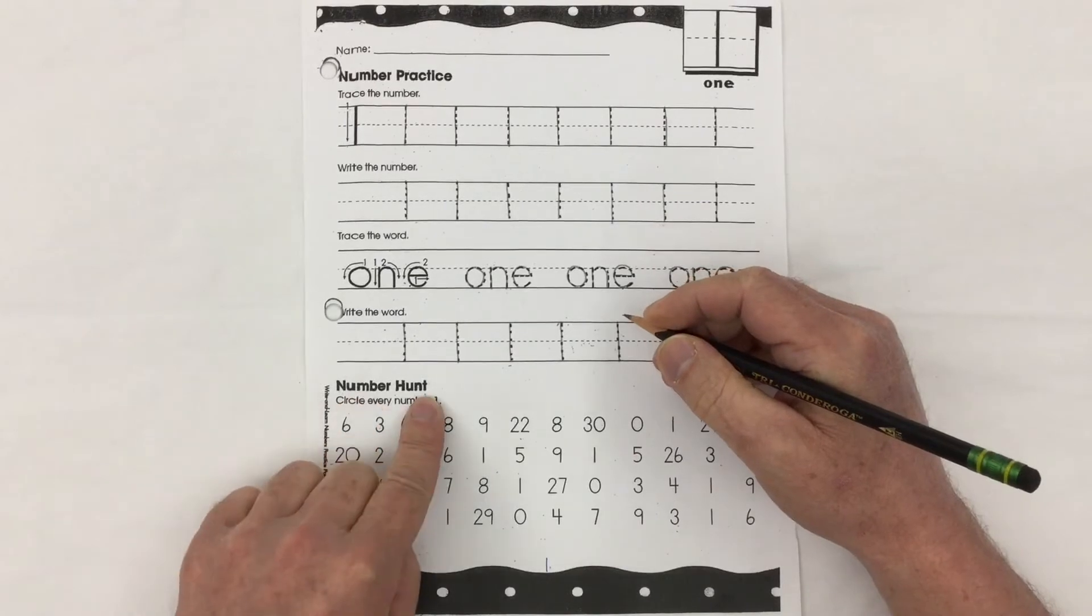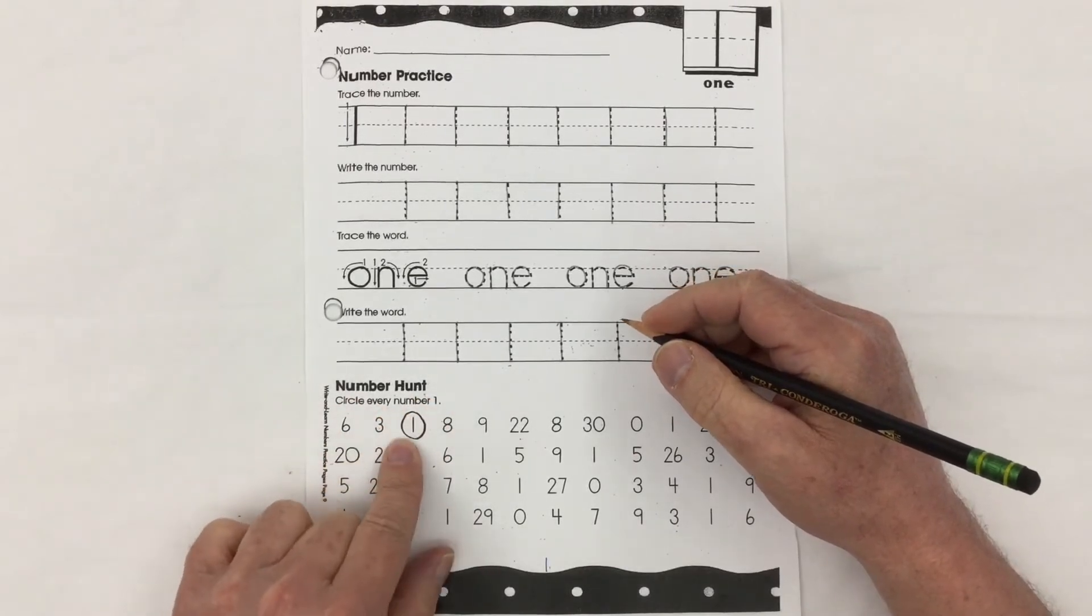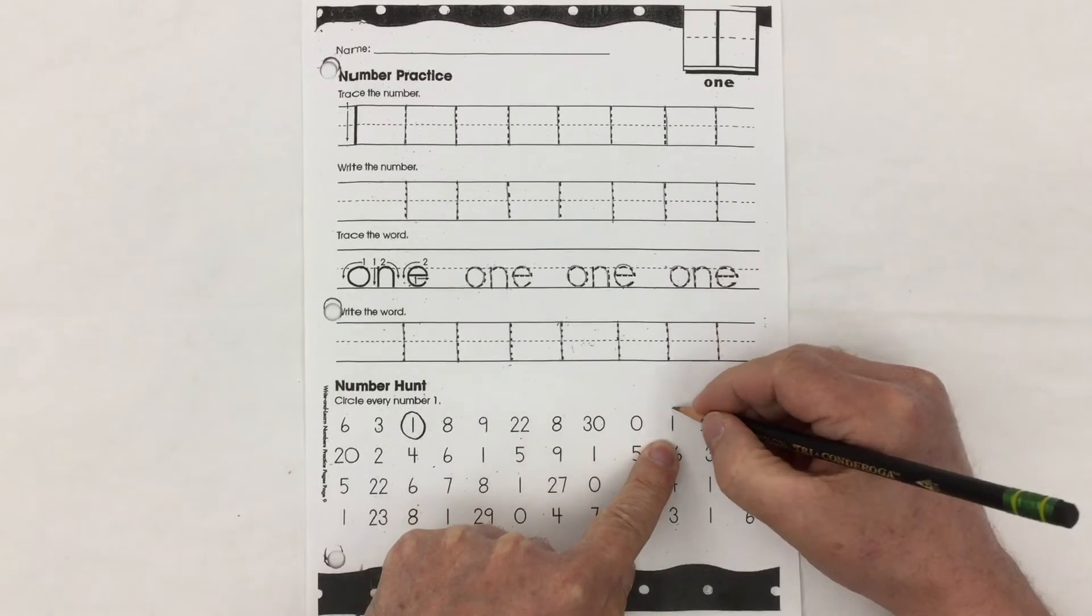This is number hunt. Circle every number one. Here's one.